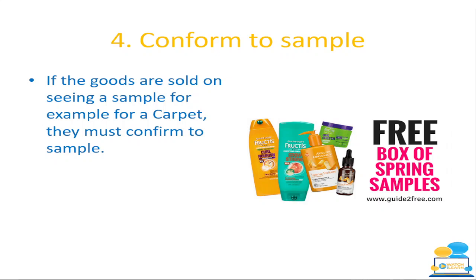Conform to sample means if goods are sold by seeing an example, what you order should be what you get. For example, if your parents went to Harvey Norman and chose a cream leather sofa, but what arrived was cream synthetic leather — that's not conforming to sample. If they bought a red carpet for the office and what arrived was a white or cream shade carpet, it's not conforming to sample. They can return it under the Sale of Goods and Supply of Services Act 1980. Even with food samples in shops — if what you buy is not according to the sample, you're entitled to redress: repair, replacement, or refund.